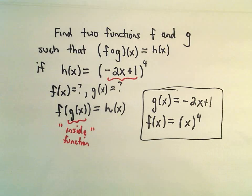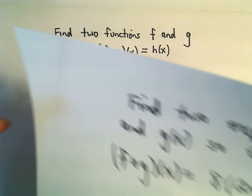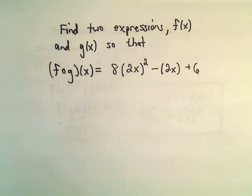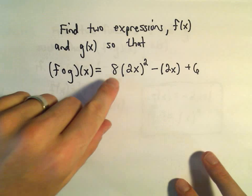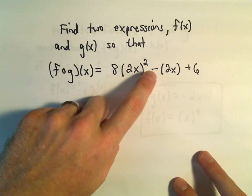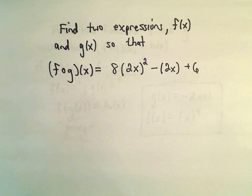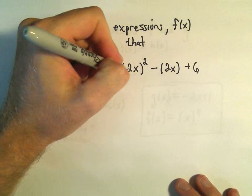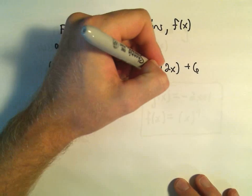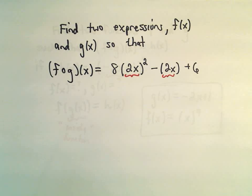Okay, let's look at another one here. So same thing, we want to figure out f(x) and g(x), so that when we do the composition, we get 8(2x)² minus this quantity (2x) + 6. So again, kind of notice the function on the inside. To me, the stuff on the inside, I see these 2x's in parentheses.